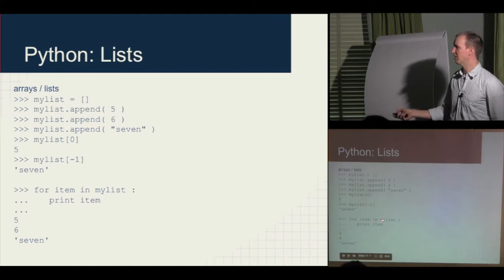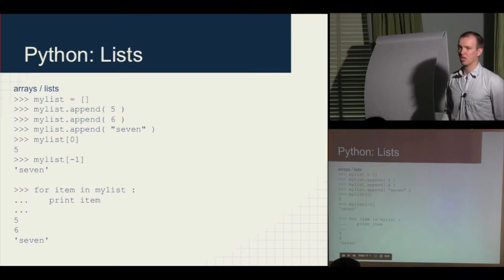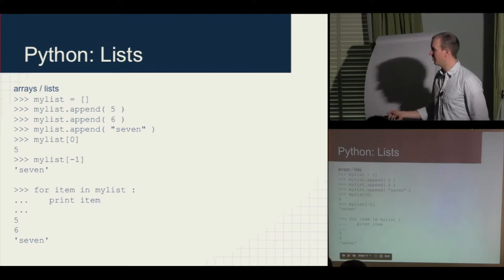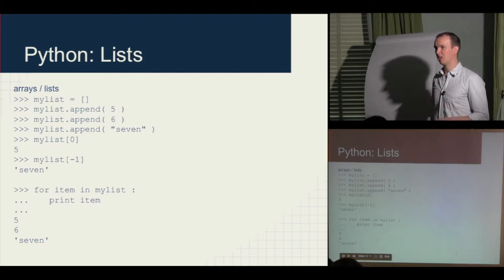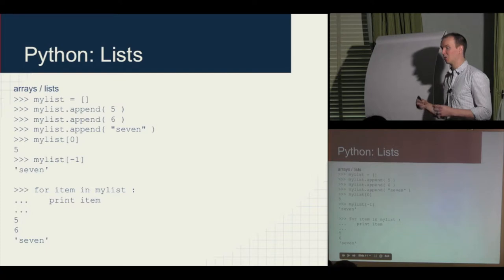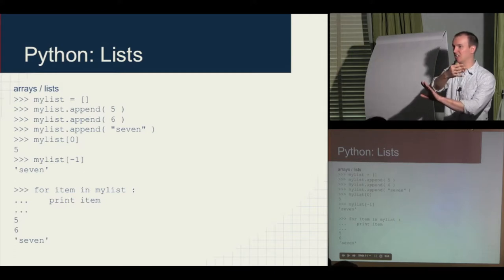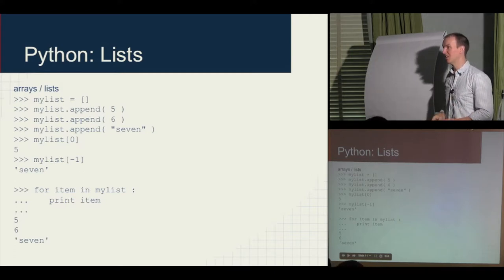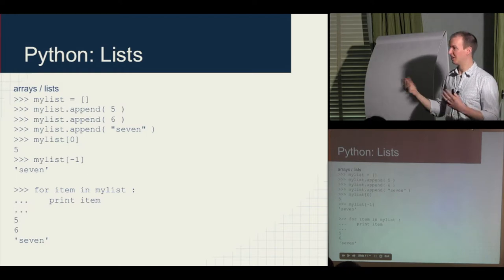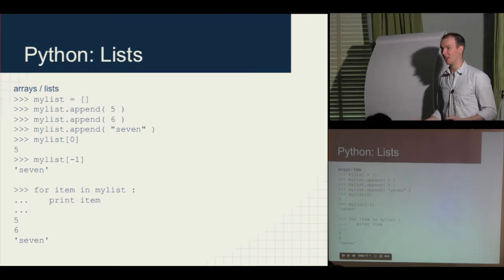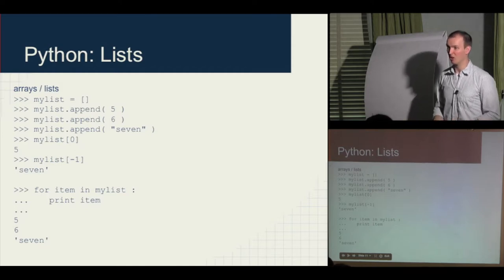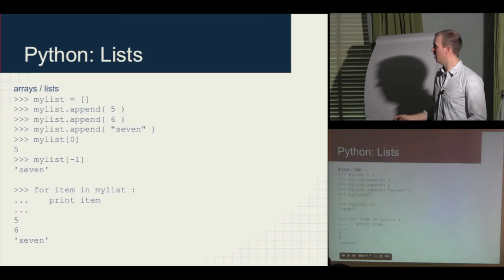When you stop indenting in the Python command line, it executes the statement. Python's scope for a for loop is based on white space, which means when you look at a Python program it's really easy to read — you can't write a Python program that's hard to read. You can't have loops that start deep and then suddenly stop indenting and go back to the beginning like you can in C++. C++ doesn't care about white space, but humans do. Python prevents you from writing code that you can't read.